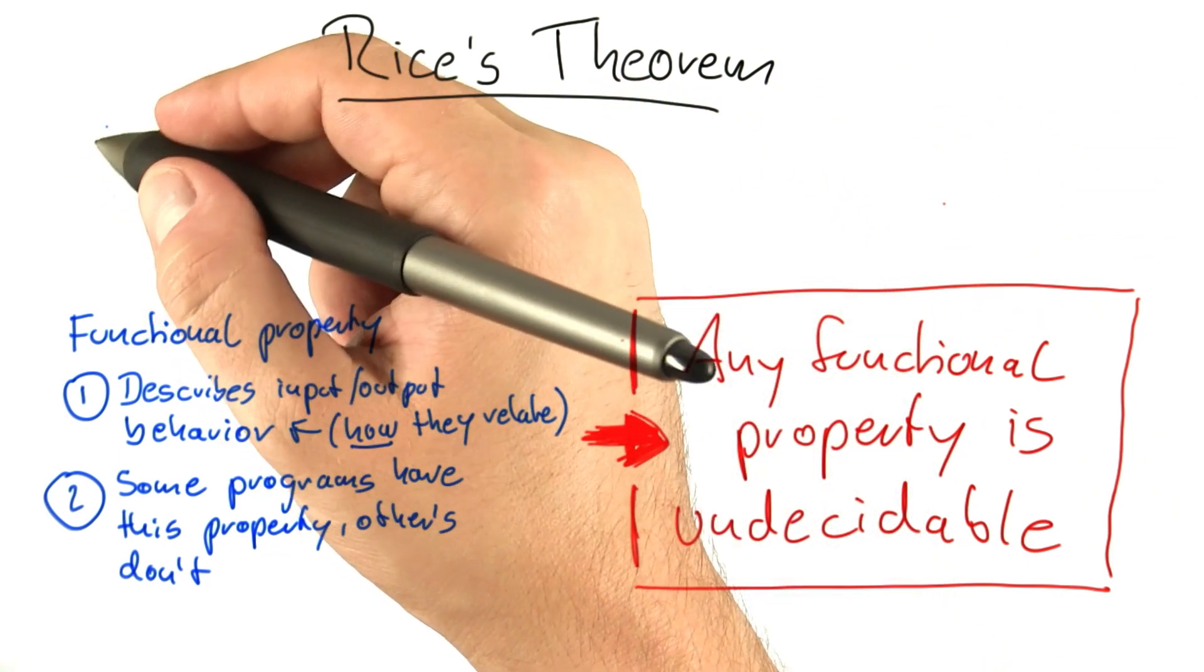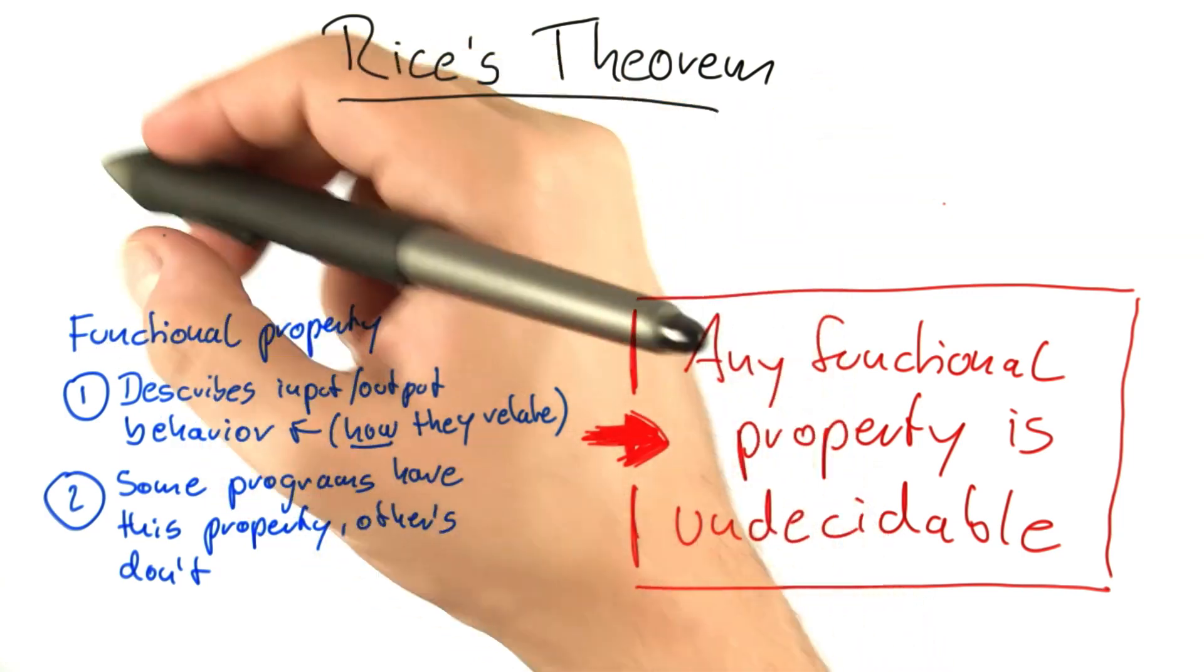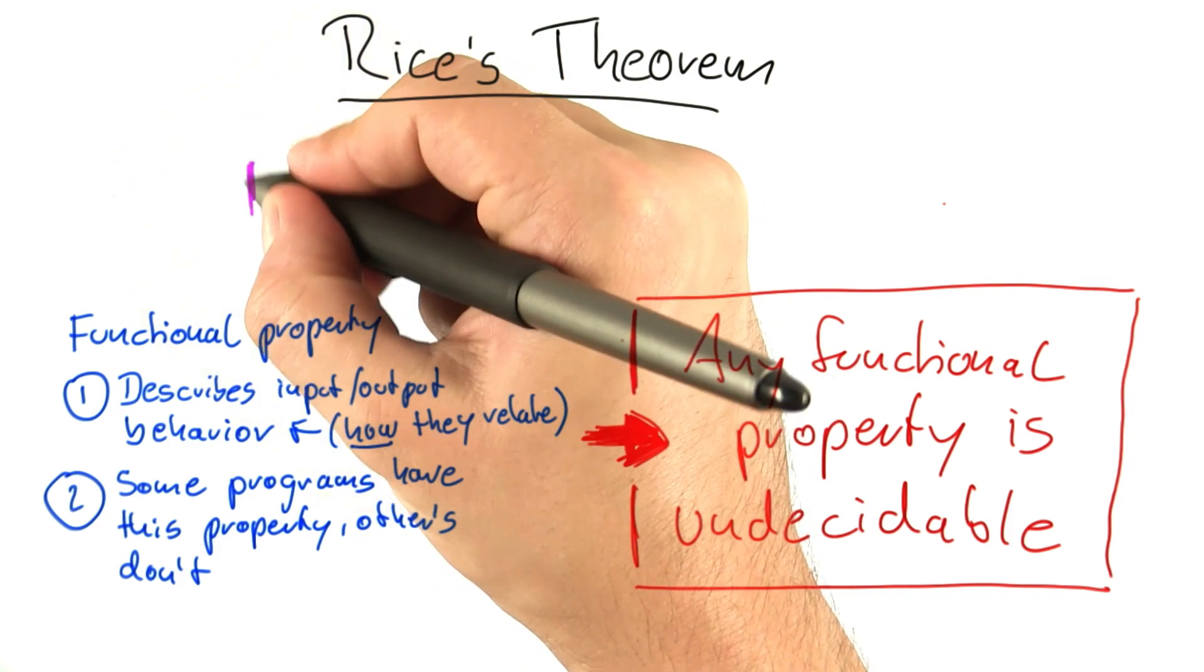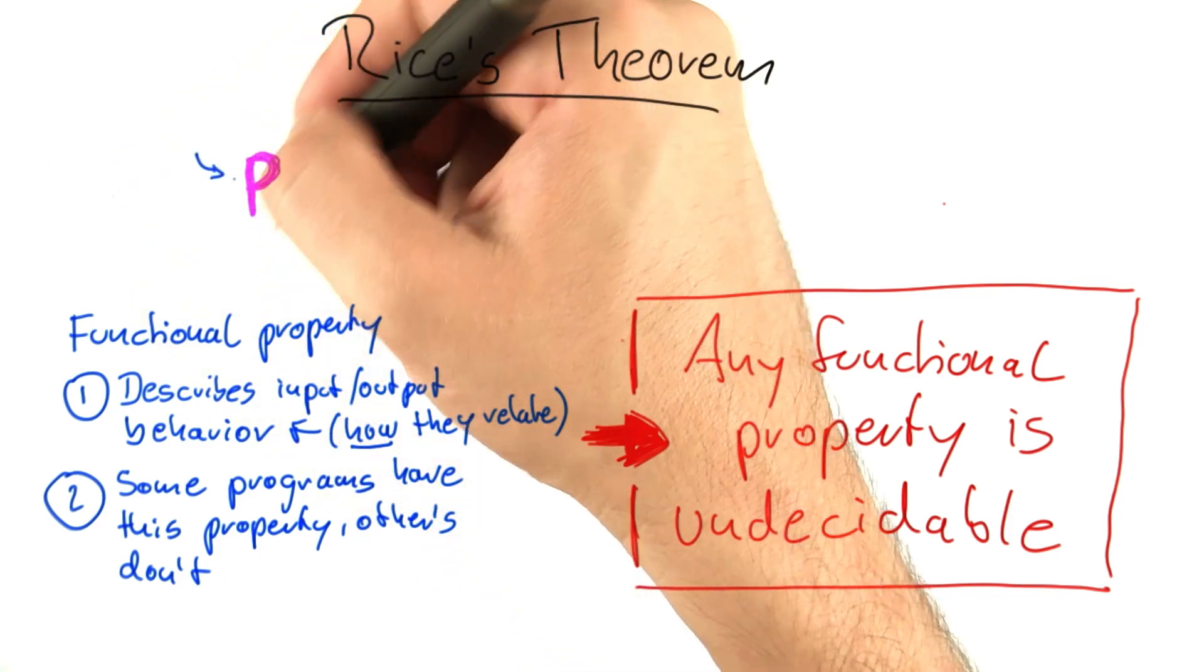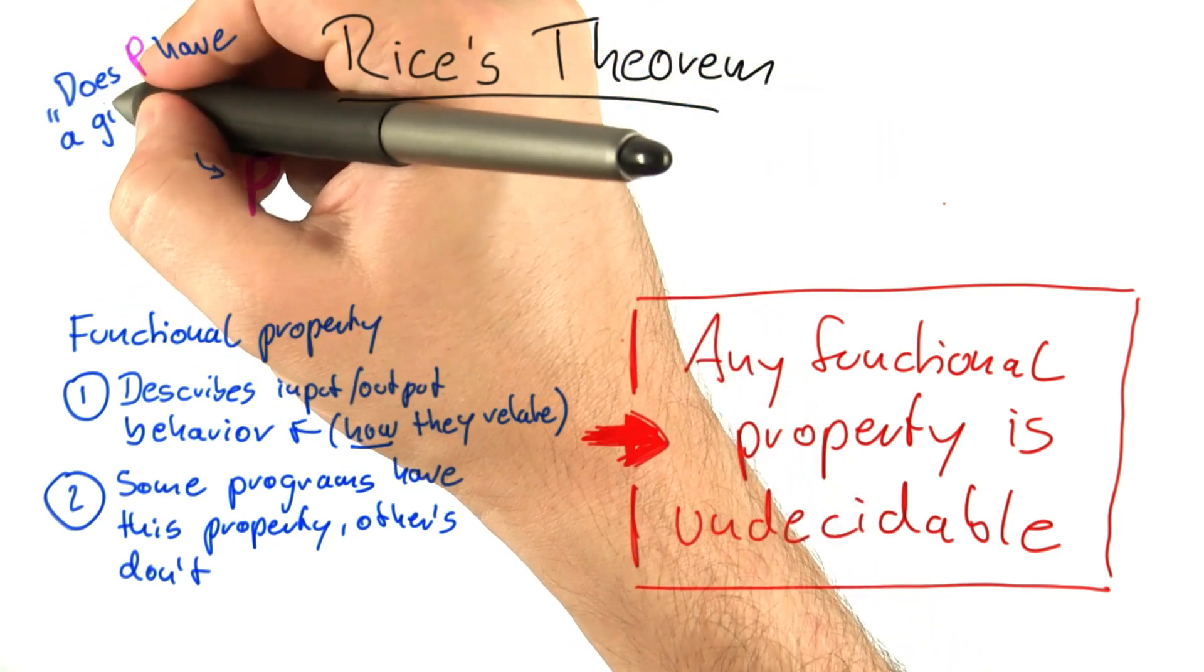So again, we assume that there's a program that can decide for another program if that possesses a certain functional property. So we're given a program p again, any program p, and we assume that no matter what p is, we can always say, does p have a functional property?